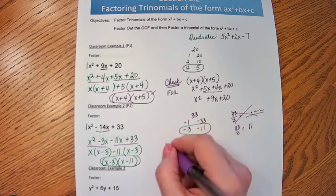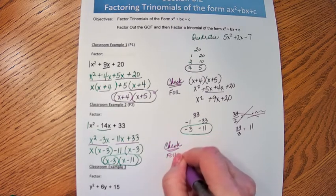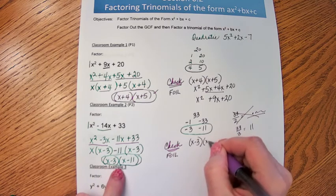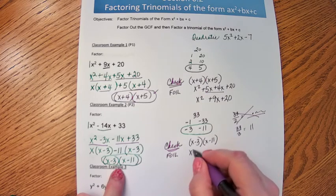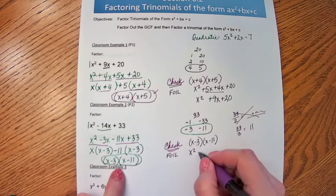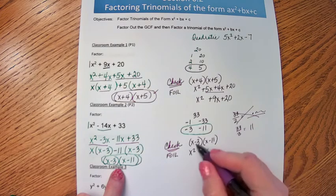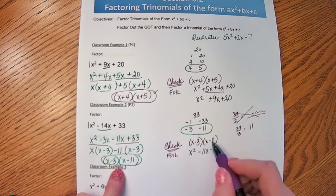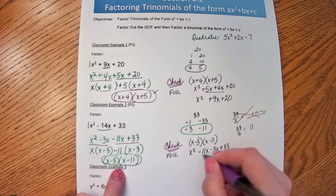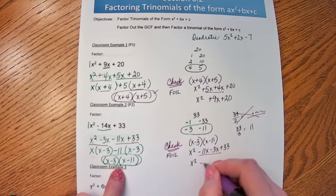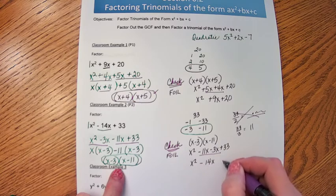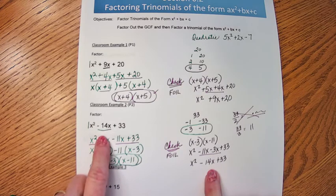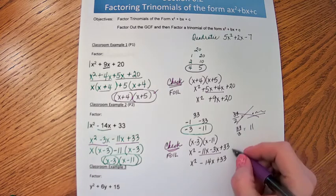But we're going to check it. We're going to check it using FOIL. You always want to check your answer, especially you can find your own sign errors. First, x times x is x². Outside, x times negative 11 is -11x. Inside, negative 3 times x is -3x. And last, negative 3 times negative 11 is positive 33. And combine your middle terms. Negative 11 and negative 3 is negative 14. Is that what I started with? Yes, it is. So it checks.